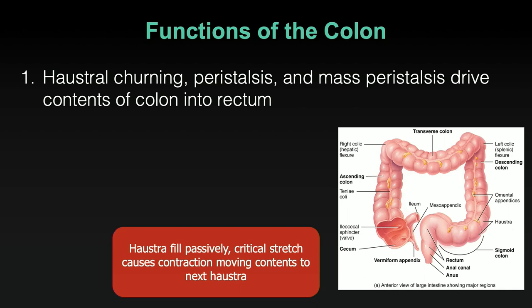Mass peristalsis occurs across the length of the transverse colon and down the descending colon, seating contents distally in the rectum. It creates pressure later in the large intestine, which is important for the defecation reflex. So we have haustral churning that individually loads the haustra as they move through, and then with meals this massive coordinated peristaltic contraction called mass peristalsis moves everything to the end of the large intestine, where it's ready to be expelled.